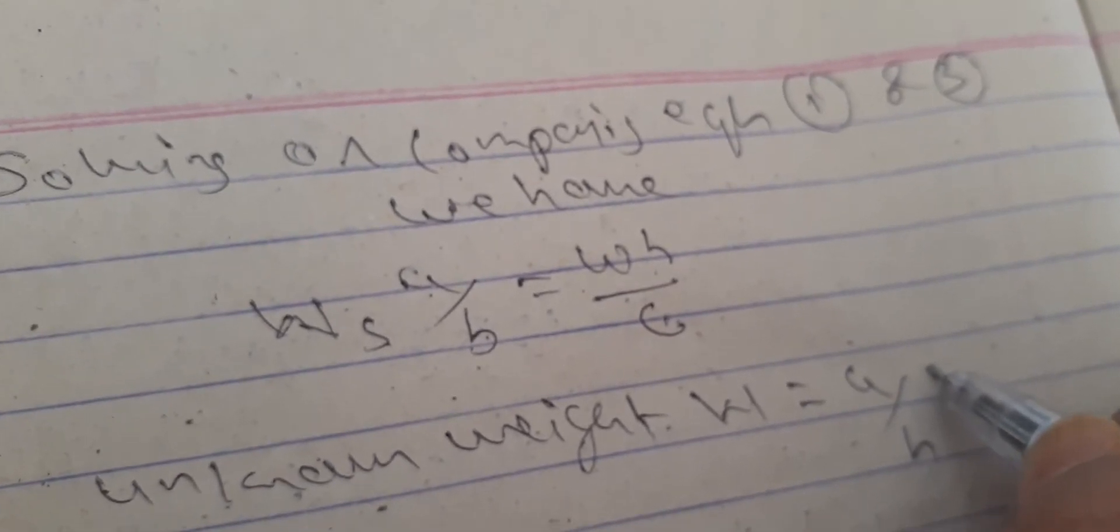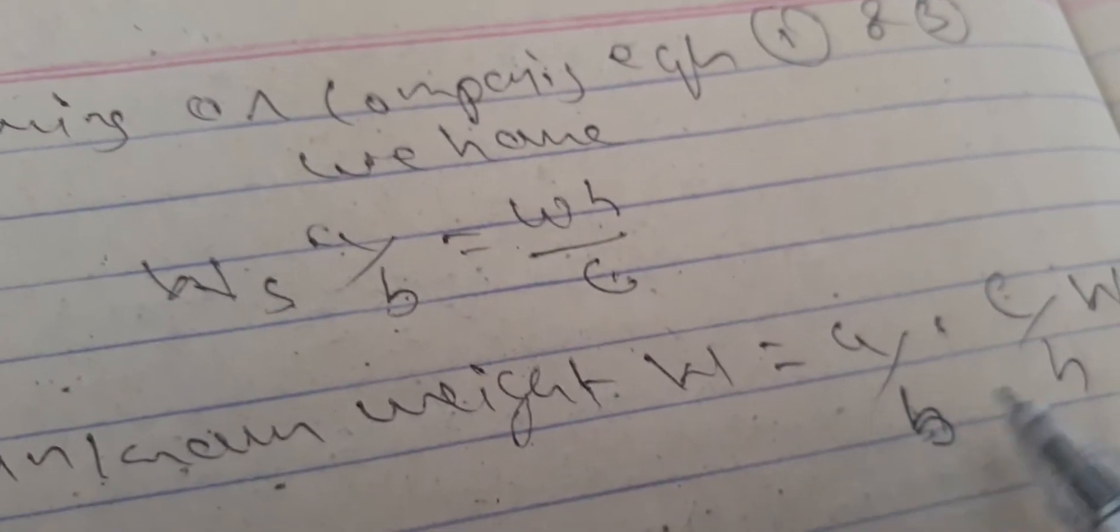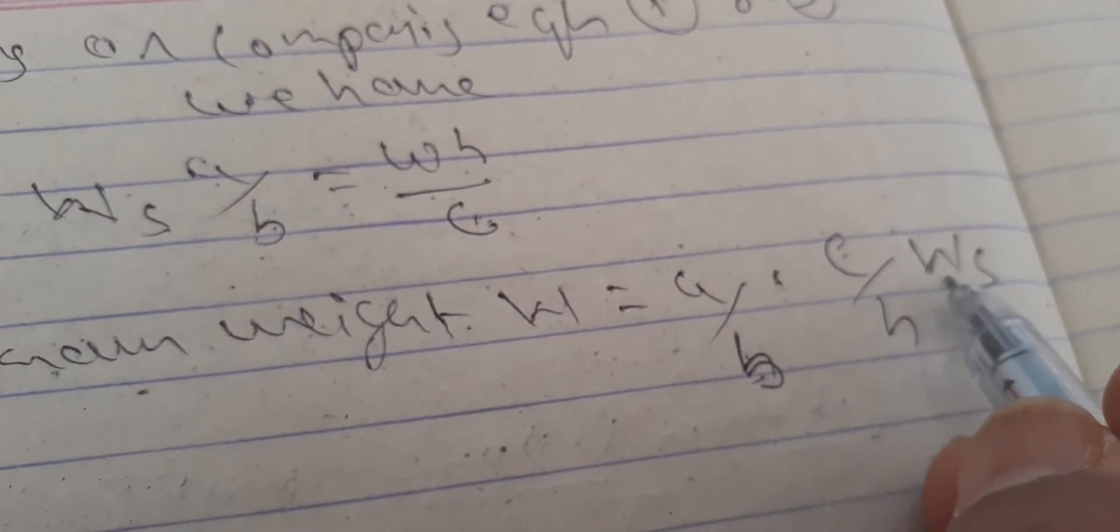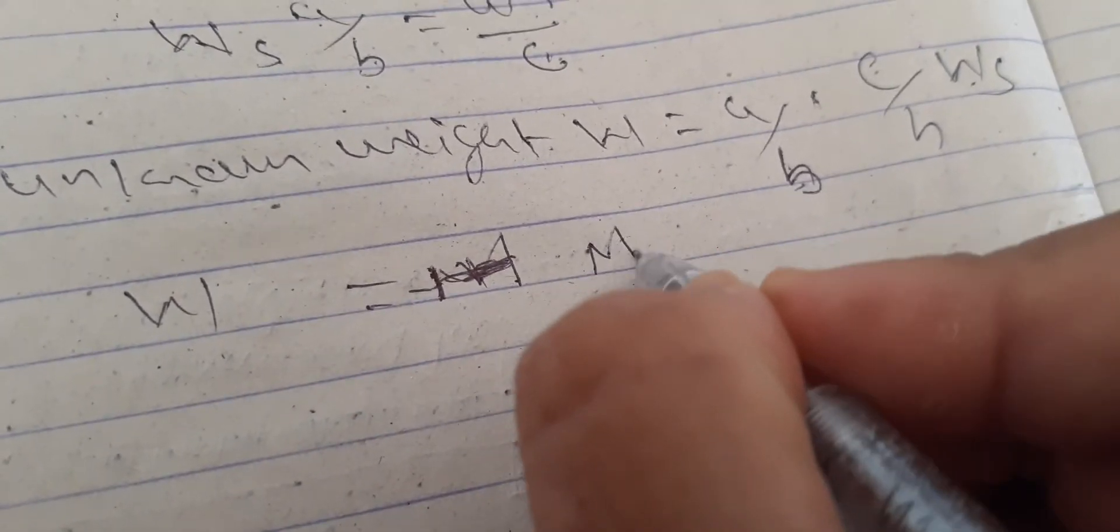Unknown weight W equals a by b into c by h into W s. That is equal to W equals M W s, M W s.